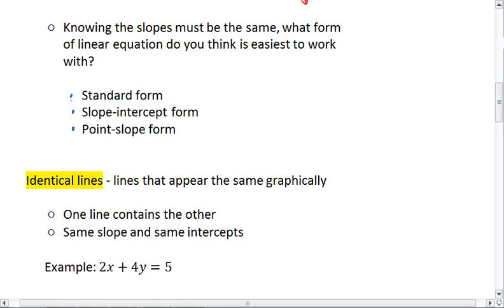Hopefully, you realize that the standard form isn't much use because the slope isn't in that form. With slope-intercept form, and with point-slope form, both forms have M in it, where M is the slope of the line.